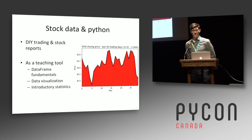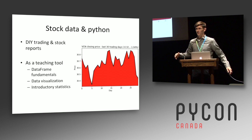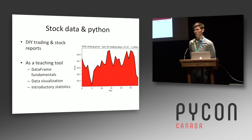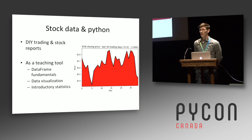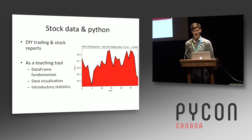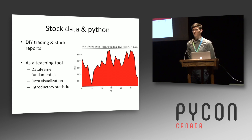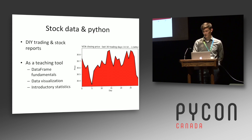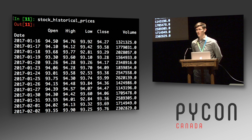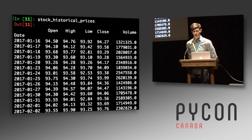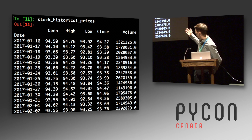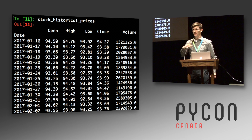I'd also like to posit that financial data, specifically historical financial data, is a really useful teaching tool when it comes to teaching people the basics of how to use pandas. You can teach them about visualizing time series, and you can use it as a really good starting point for some introductory statistics. A standard data frame of historical stock data has an index built on datetimes and various floating point numbers discussing the highs and lows throughout the day, and you can look at how those are changing over time.